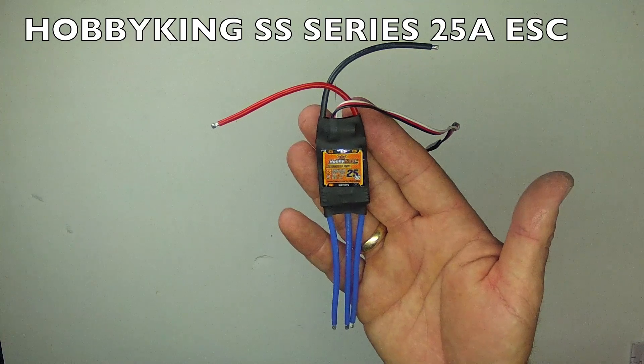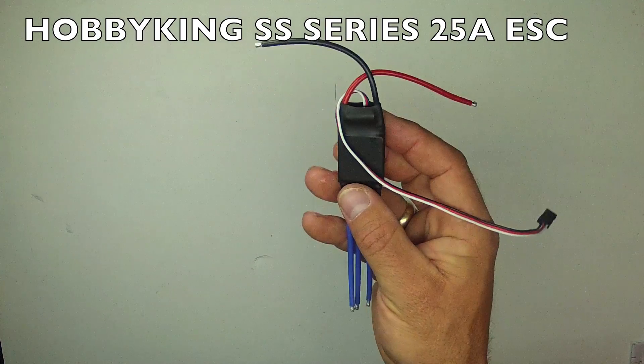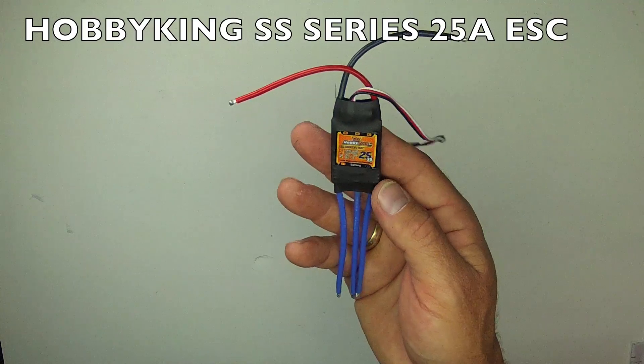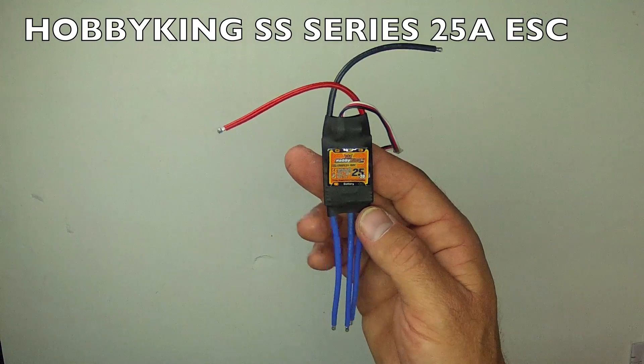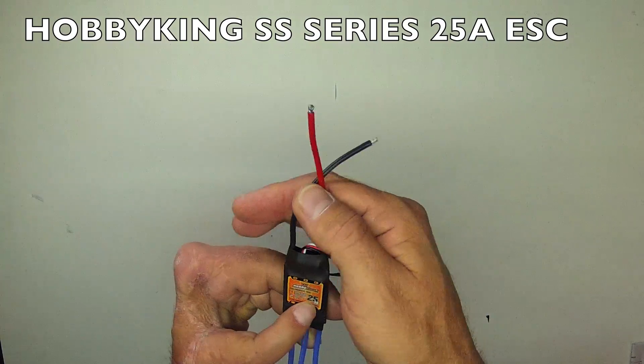This is the Hobby King Super Simple Series 25 Amp Speed Controller. It is a basic speed controller with a few programming functions. It has a 2 Amp linear BEC. It comes with neither bullet connectors attached nor battery connectors. It is $7.